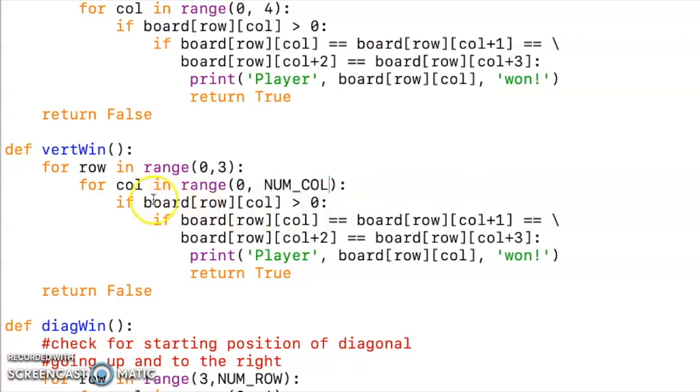And then we'll make sure that the piece we're looking at, the position of the board we're looking at isn't zero, which means it's blank. And this time, the row is going to go up one each time. And the column will stay the same. So first, I'll adjust the row. And then I'll make sure that the column is not getting adjusted each time.